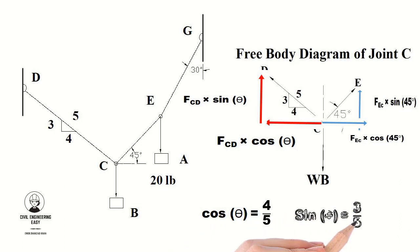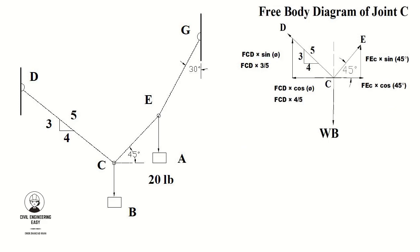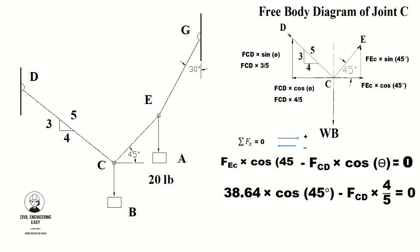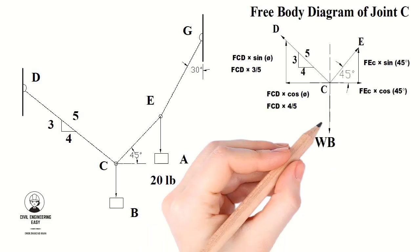Use the equilibrium equation ΣFx = 0 at joint C. Take the right force as positive and the left force as negative. FEC × cos(45°) acts on the right side and FCD × cos(θ) acts to the left. Setting their algebraic sum equal to zero and substituting cos(θ) = 4/5, we eliminate FCD and find the force in CD equal to 34.15 pounds.